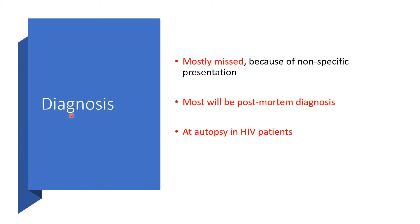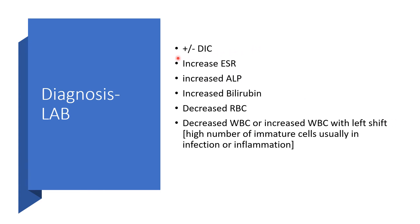How can we make the diagnosis of this disease condition? It is mostly missed, and I don't blame anyone for missing it because it is not specific in presentation. Most will be diagnosed during post-mortem or autopsy, particularly in HIV patients where that diagnosis will be made when they are already gone. Regarding laboratory diagnosis: there may or may not be DIC — that is disseminated intravascular coagulopathy.